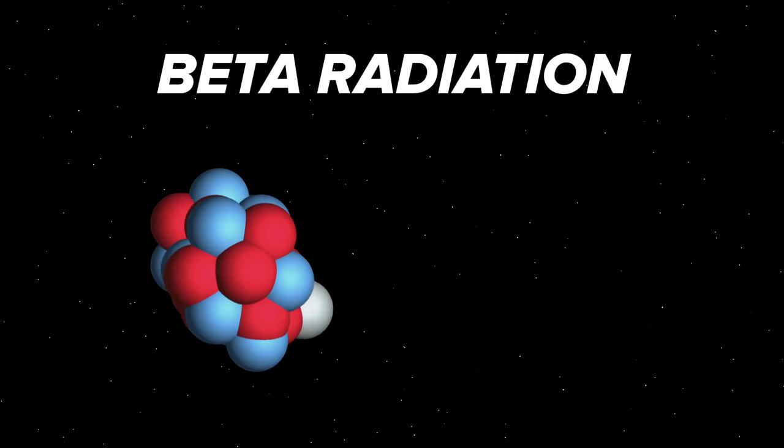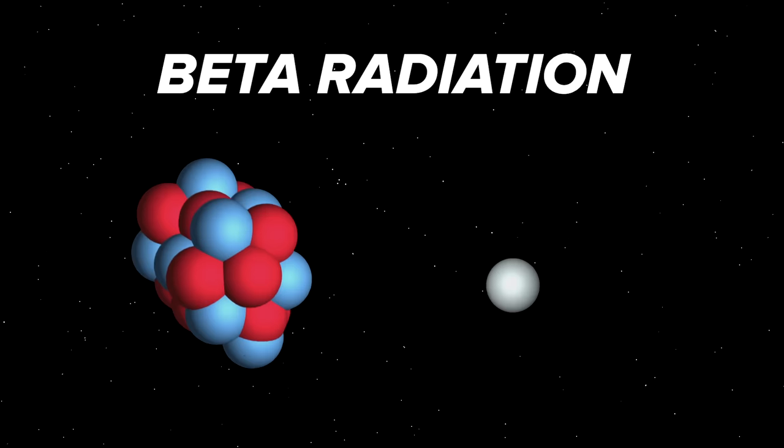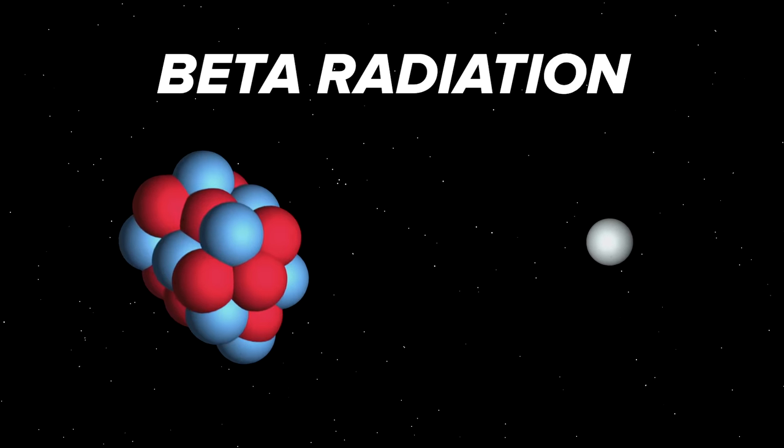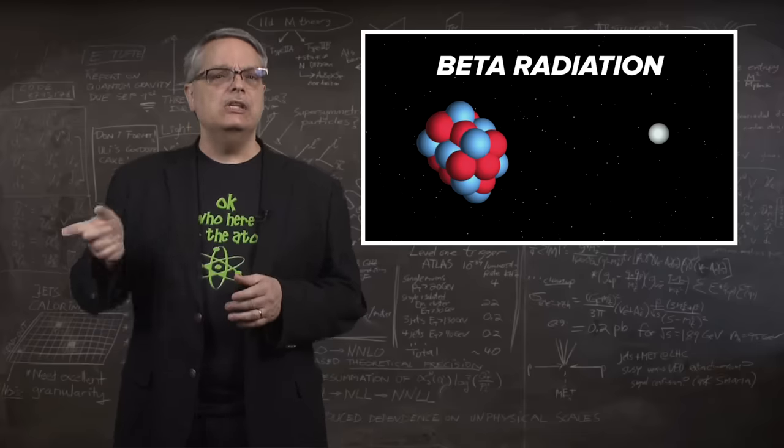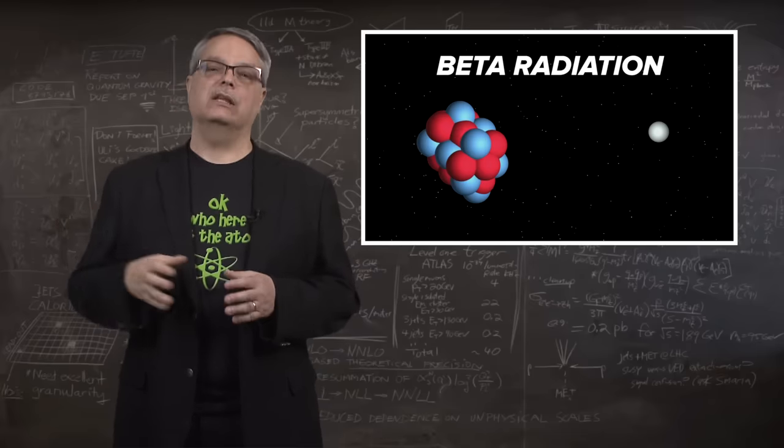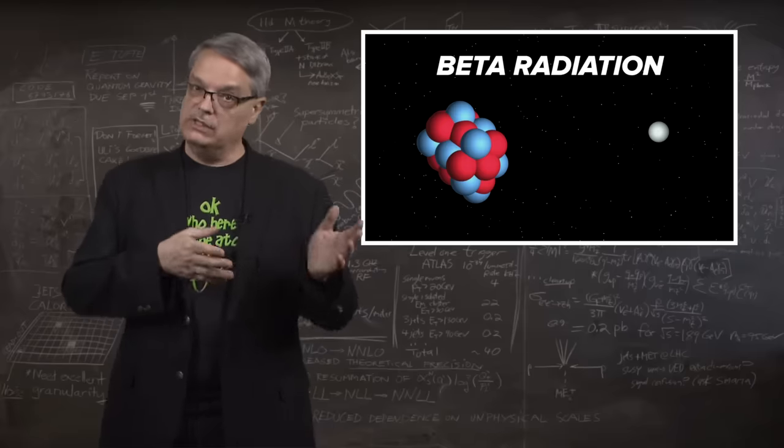Beta radiation is caused when an atomic nucleus shoots out an electron. We could call it electron radiation, but the name was invented before we identified the emitted particle as an electron. It generally occurs when a neutron in an atomic nucleus turns into a proton and an electron. The proton is kept inside the nucleus and the electron escapes.